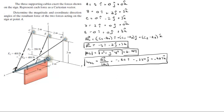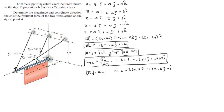To find FC, which acts along that unit vector, we know the magnitude of FC is 400. So FC equals −324.4i − 129.6j + 194.8k. This is the Cartesian vector form of FC.